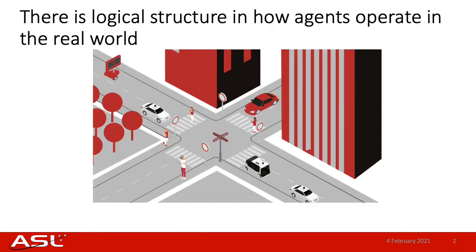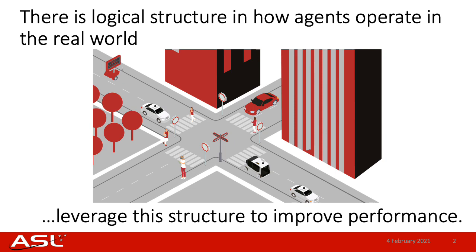As autonomous systems are going to operate in the real world and interact with humans, there's going to be some kind of structure or rules that govern how these systems should or should not behave. For instance, there are road rules that govern how cars on the road should interact with each other. Hence, the goal of this work is to create a framework that allows us to leverage this logical structure to improve the performance of the different elements that make up the autonomy stack.